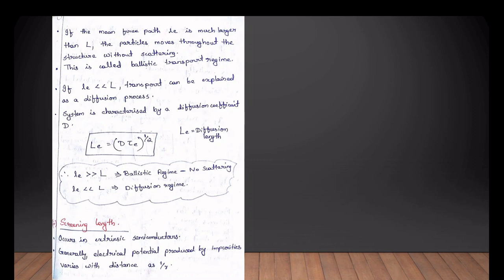We now describe the diffusion process. If you use a diffusion length, you can use the diffusion length. The third characteristic parameter is diffusion length.